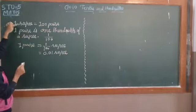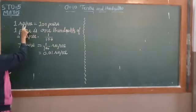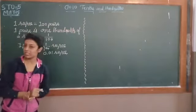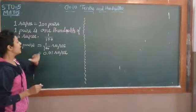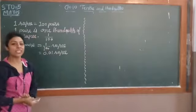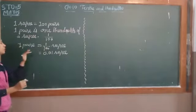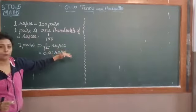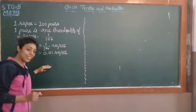So we can say 1 rupee is equal to 100 paise. To convert rupees to paise, multiply by 100. To convert paise to rupees, we will divide the number by 100.